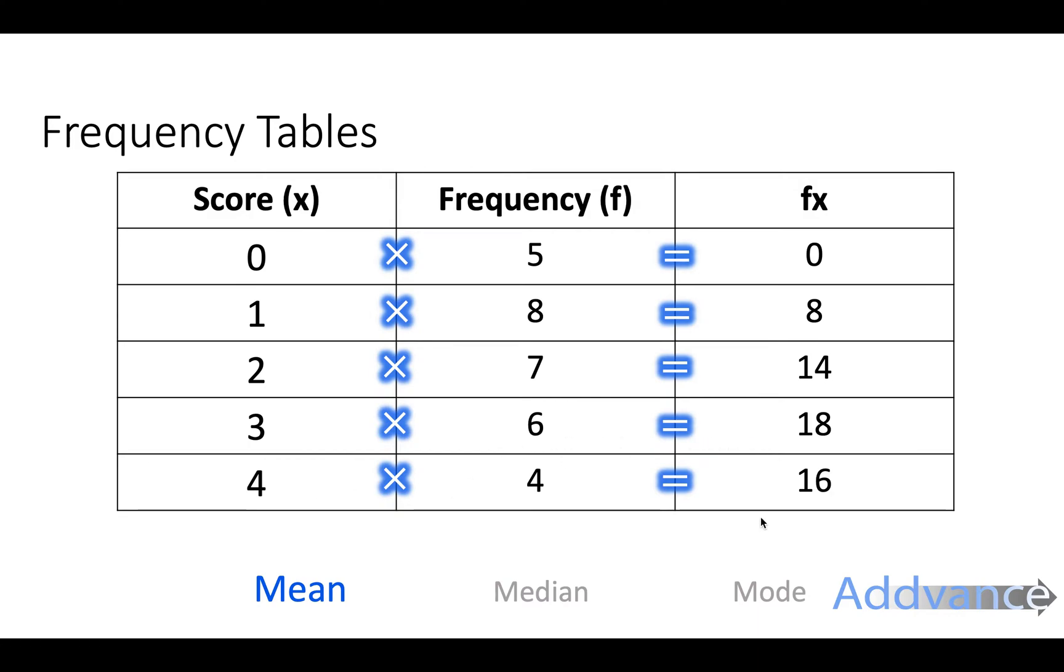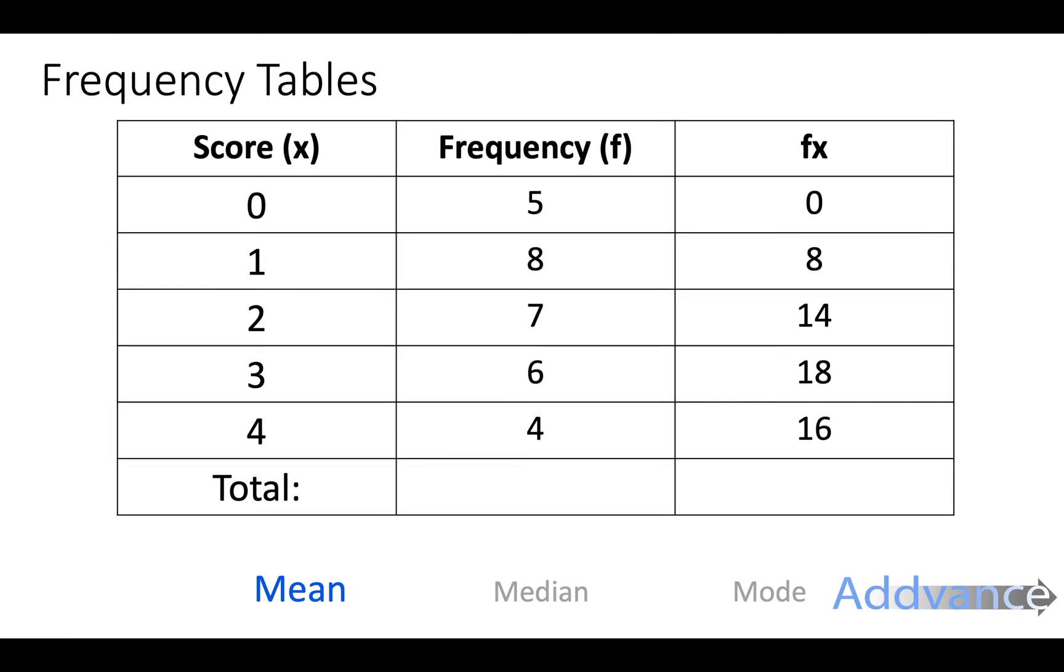Once we've done that, we can add a bottom row for the totals. We're going to find the total frequency by adding all these together: 5 plus 8 plus 7 plus 6 plus 4 is 30. And then we're going to add up the fx column: 0 plus 8 plus 14 plus 18 plus 16 is 56.